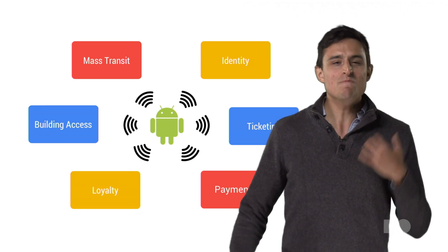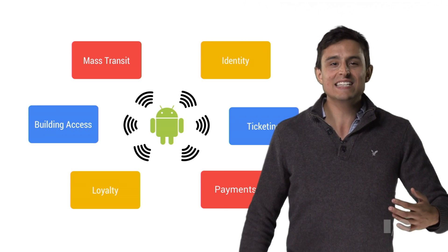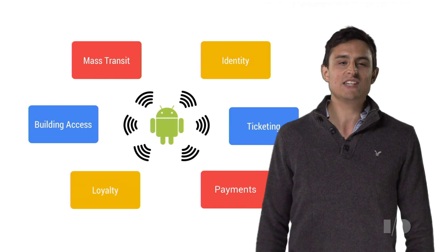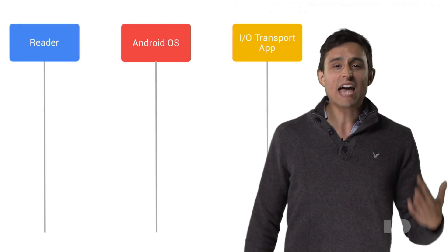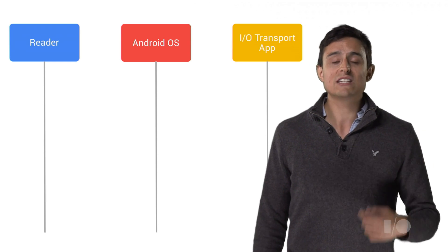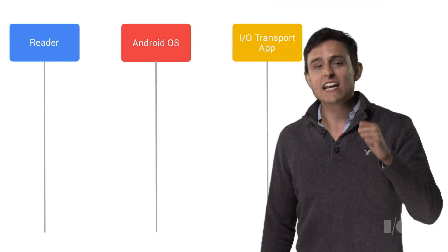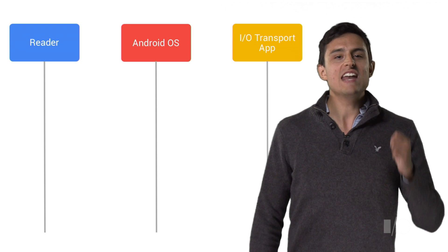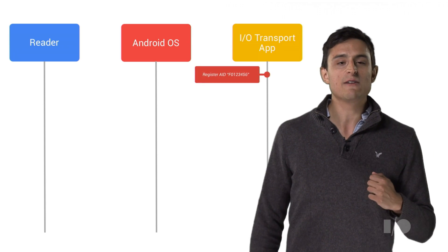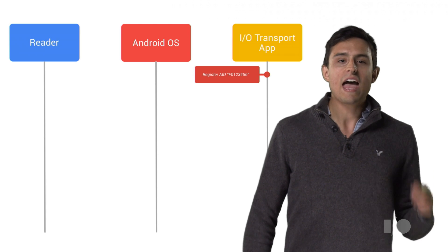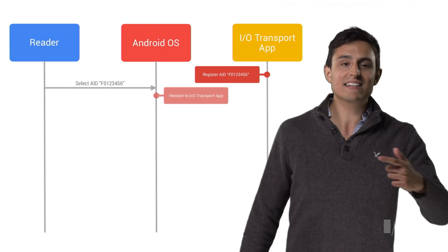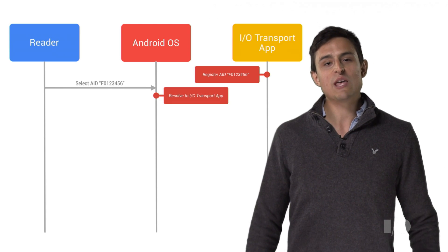Mass transit, identity, building access — these are just the tip of the iceberg with what you can build using HCE. HCE allows apps on your phone to look like a smart card, such as a public transit or payment card. Just like an application running on a smart card, an HCE app just needs to register an application identifier, or AID. Application identifiers allow NFC readers to select the application they want to talk to.